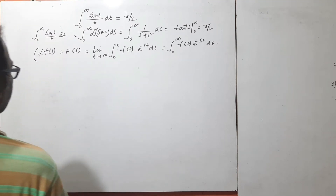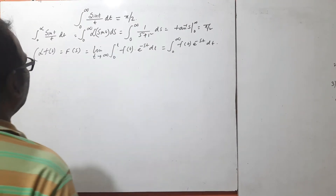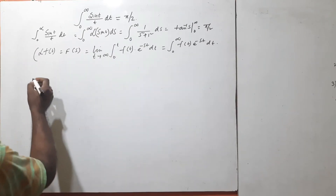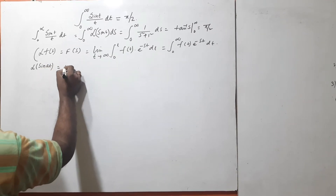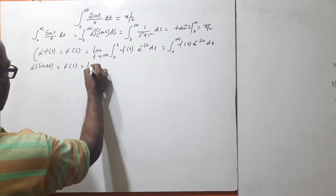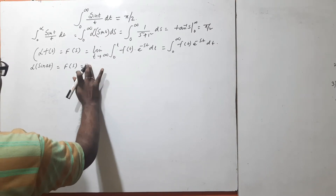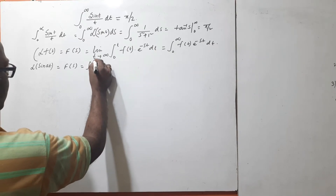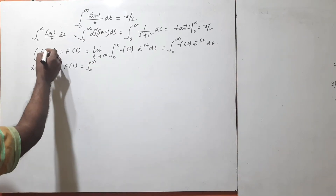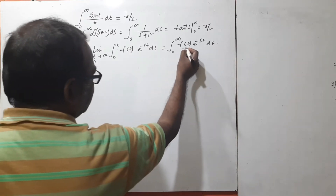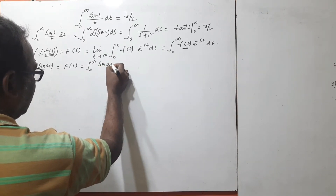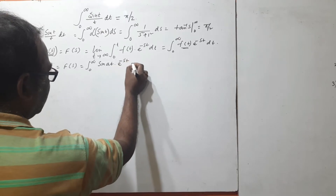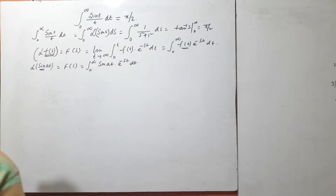First we want the Laplace transformation of sin(t). Theoretically, I am using sin(at). So the Laplace transformation of sin(at) is F(s), equal to the integral from 0 to infinity of sin(at) · e^(−st) dt. So this value is called the Laplace transformation of sin(at).